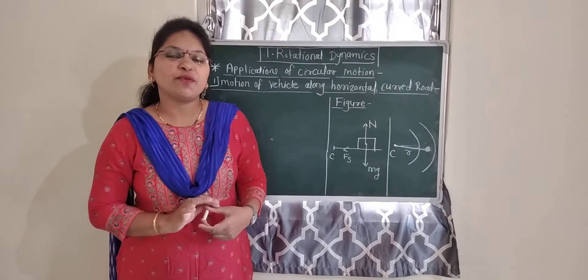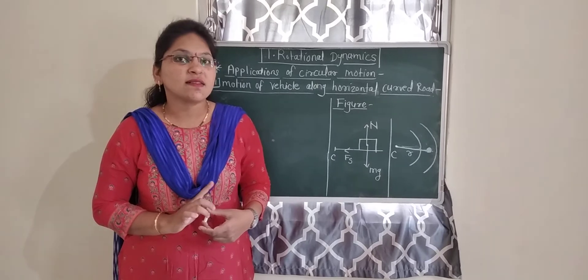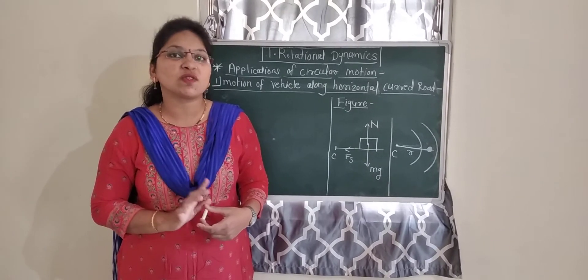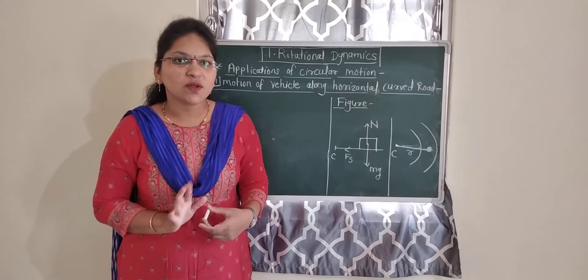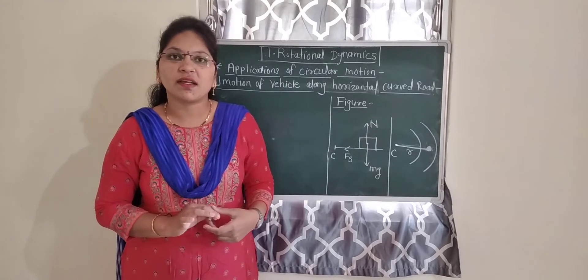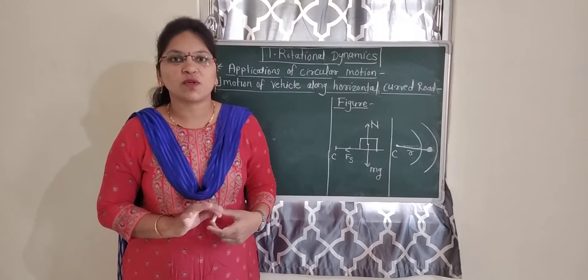Suppose you switch a fan on — the speed keeps increasing. When the speed increases, it is accelerated motion. That is non-uniform circular motion.